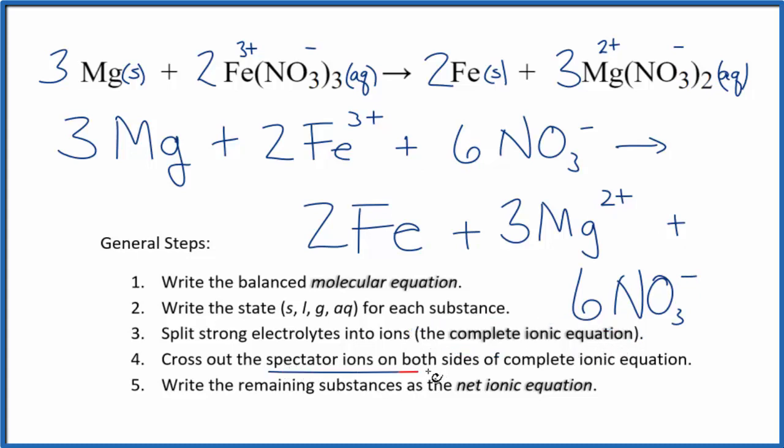Now we're going to cross out those spectator ions that are on both sides. So I can see the only thing that's the same, these are the reactants and these are the products, the only thing that's the same, these 6 nitrates here.